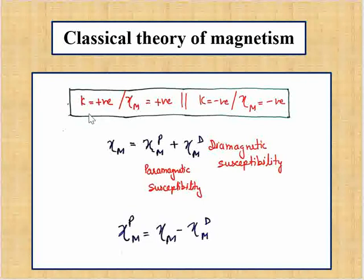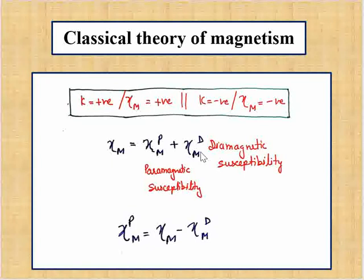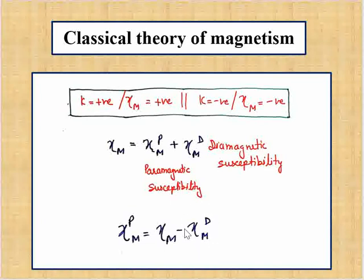We can conclude that if any kind of susceptibility is positive, it is a paramagnetic substance, and if it is negative, it is a diamagnetic substance. Experimentally, what we measure is a combination of both paramagnetic and diamagnetic susceptibility, because a substance has both paired and unpaired electrons. To get the paramagnetic susceptibility, we must subtract the diamagnetic susceptibility from the total measured susceptibility.